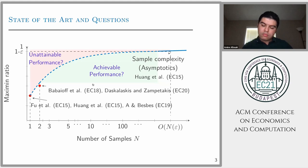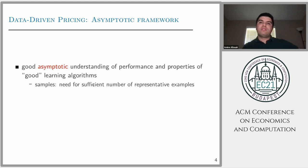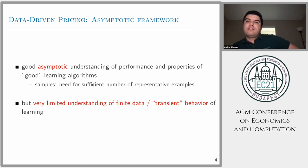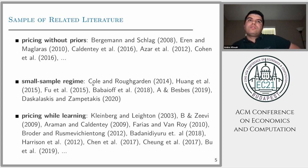As I mentioned, there's a good understanding of the sub-optimal regime, but there's very limited understanding of this finite data or transient behavior of learning. I will skip the literature review I already mentioned the main papers, but I invite you to look at the paper online to see related literature.